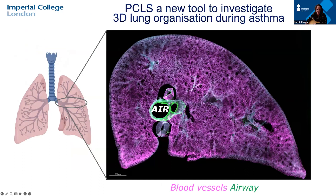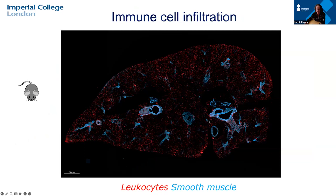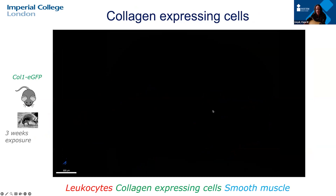If we section through a lobe of the mouse lung, here is one lobe where we've stained the blood vessels pink and the airway in green — a cross section of one of the breathing tubes going into the lung. We can stain for different cells: leukocytes, cells of the immune system, in red, and smooth muscle in blue. We can pick up the airways and blood vessels and see how they change during disease.